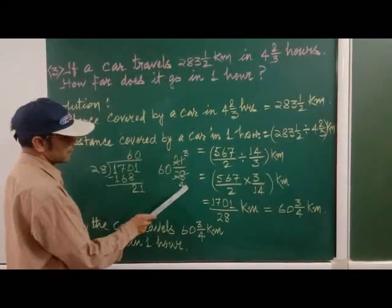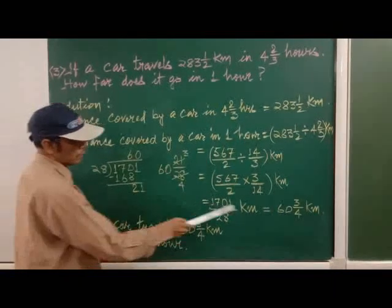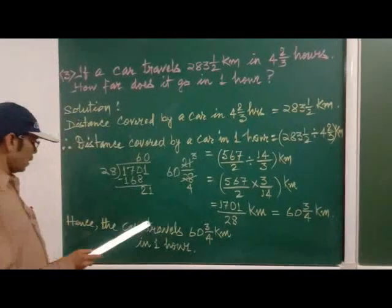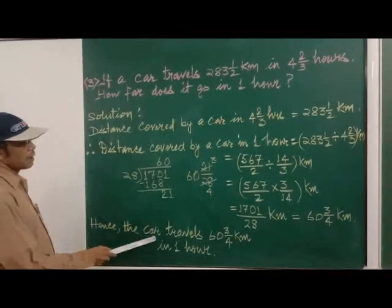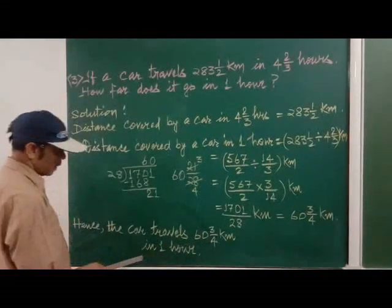So 7, 3 is 21. 7, 4 is 28. So also will be 63/4. So 63/4 kilometers. So in the end, you will write hence. The car travels 63/4 kilometers in one hour.